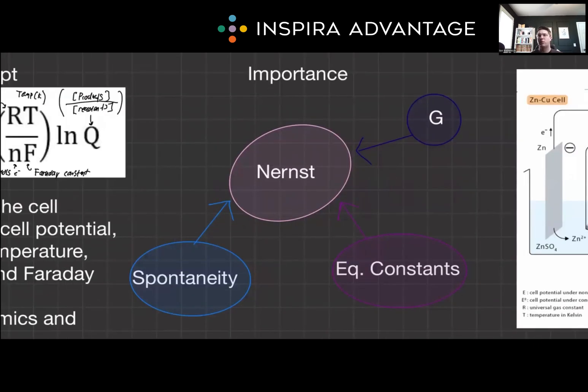So why does this matter and what type of questions do you need to apply this concept to on the MCAT? Well, there are several reasons. One, it highlights how cell potential varies with ion concentration. Two, it demonstrates the temperature dependency of cell potentials. So we know that temperature does matter.